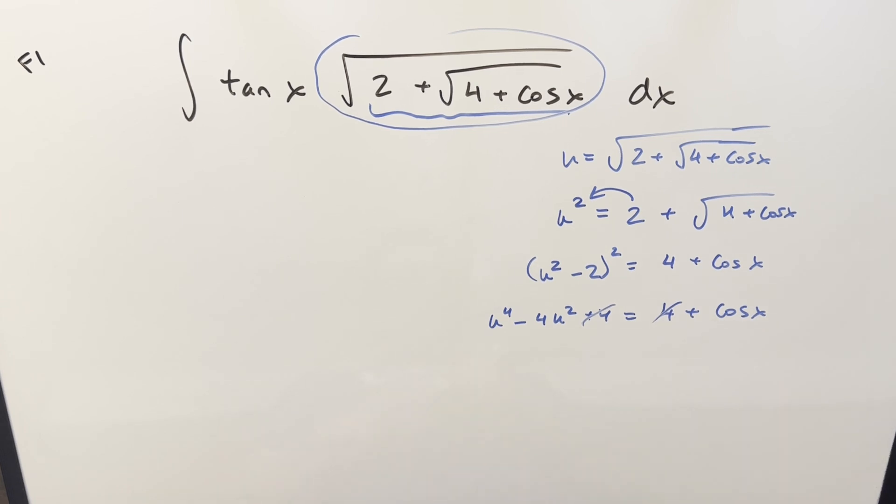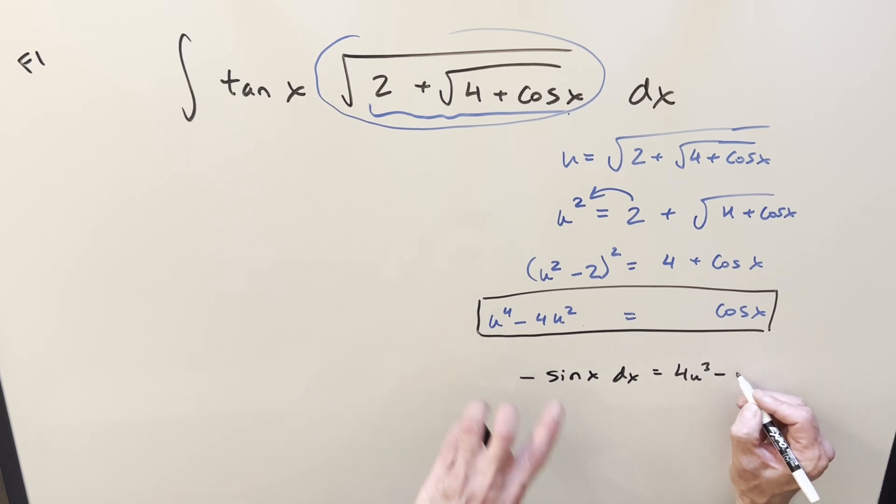Now what we can do is cancel out the 4, subtract it on both sides. Then I was thinking maybe we could take an inverse, but I think it might be nicer just to leave it like this as an expression for cosine. We can actually take a derivative of this thing. Derivative of cosine is going to be minus sine x dx. Derivative of this side is going to become 4u cubed minus 8u du.